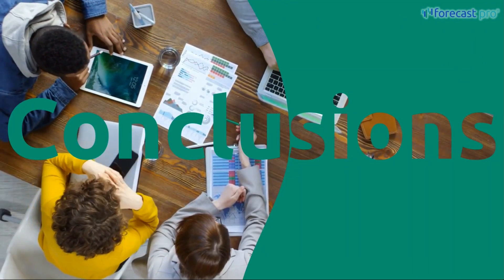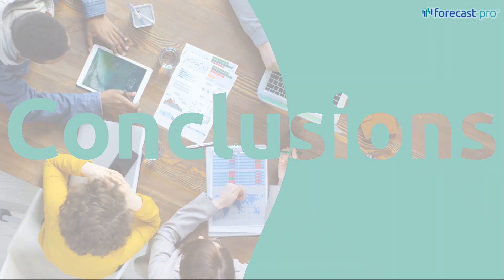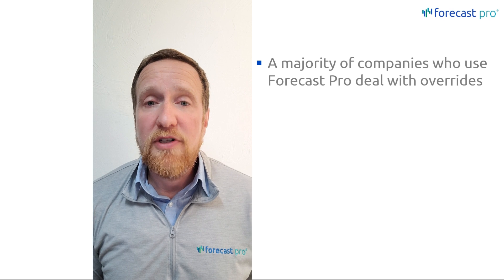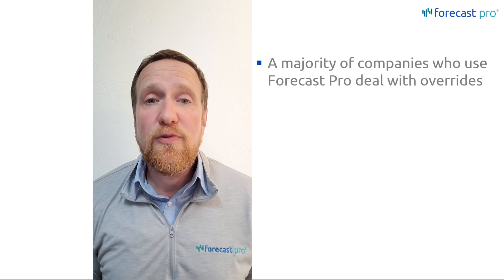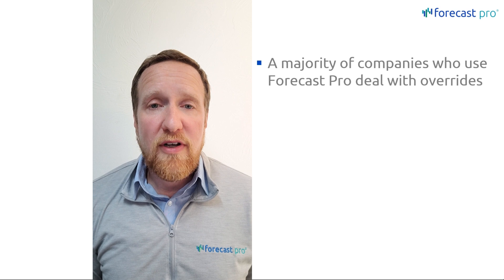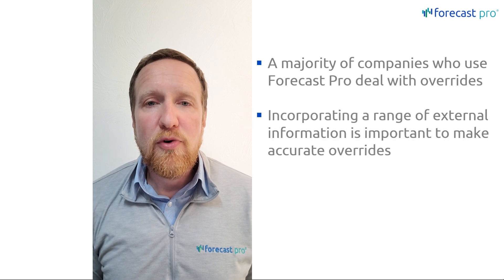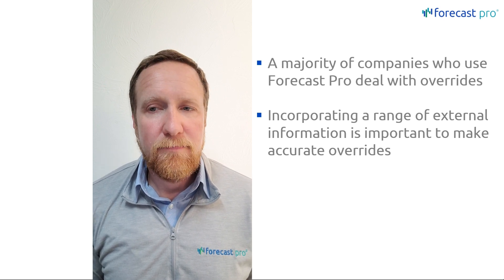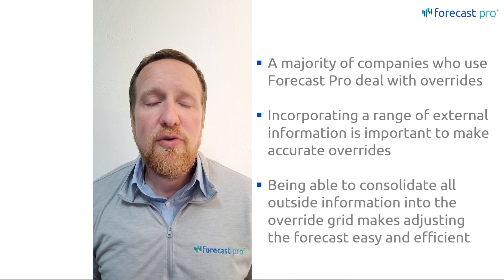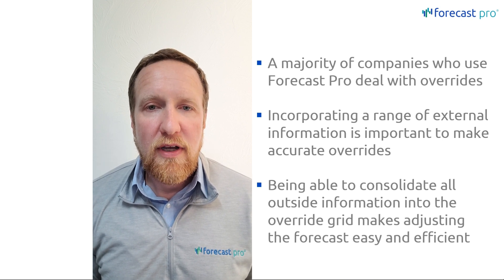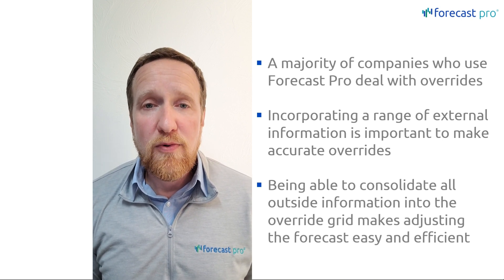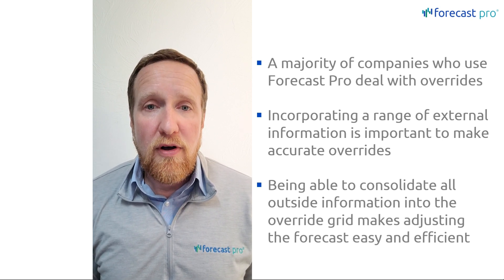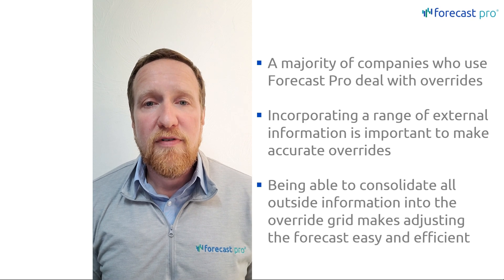Now let's run through some conclusions. The majority of companies who use Forecast Pro use the override grid — it's just a fact of life. As we've shown throughout today's webinar, we can use this override grid to gather information from multiple sources and use that information to make the best overrides possible. Being able to use Forecast Pro as a consolidation point is one of the main benefits of the tool, allowing you to bring in all of this outside information, make the appropriate call, and make the best possible overrides that you can.